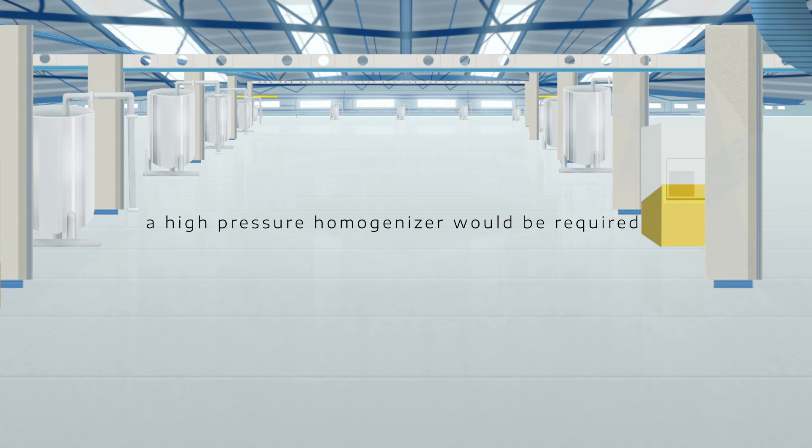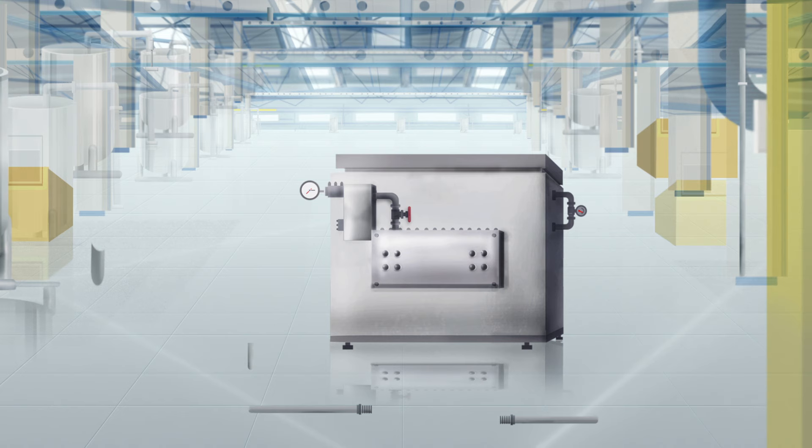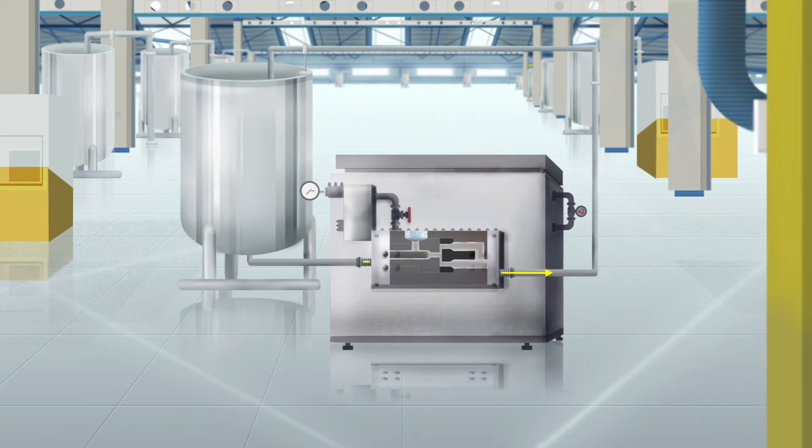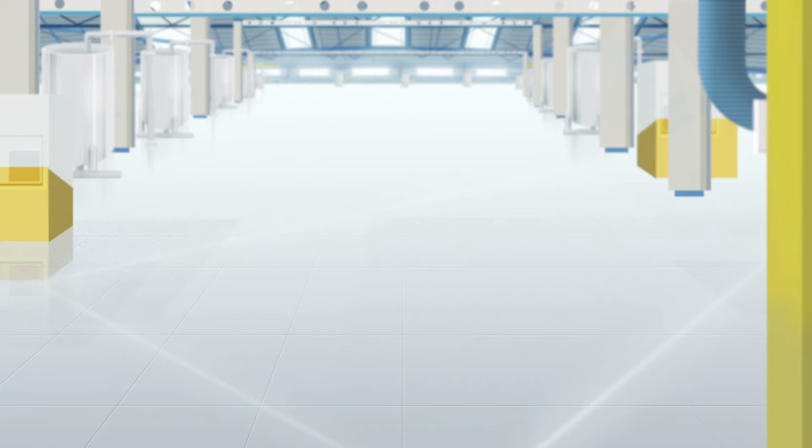For the few applications that actually demand sub-micron particle size, a high-pressure homogenizer would indeed be required. However, throughput can be low and sometimes more than one pass through the machine may be required, especially where it is being fed with a product with a large or uneven particle or globule size.